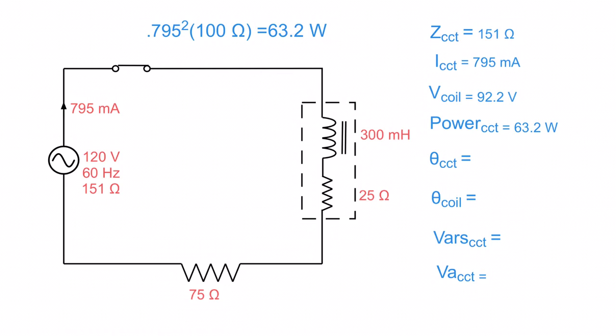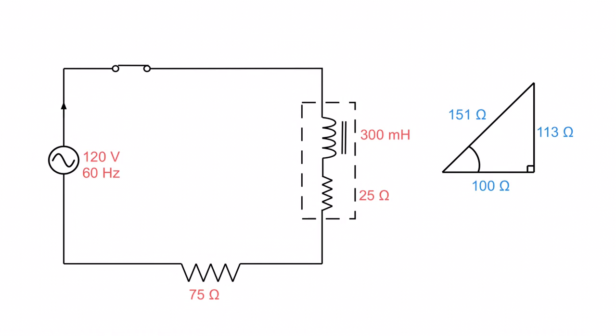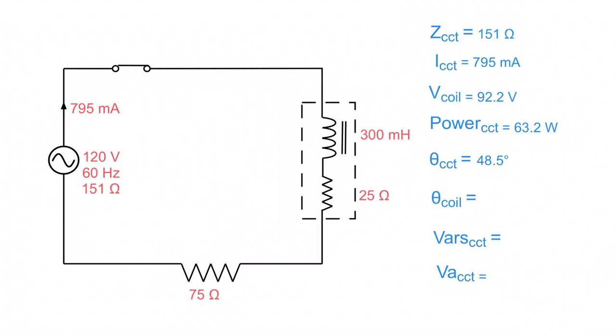Now let's find the phase angle theta of the circuit. Going back to the impedance triangle: 100 ohms resistance, 113 ohms reactance, 151 ohms impedance. To find theta, I take 100 divided by 151 and then take the inverse cosine. That works out to be 48.5 degrees for the circuit's phase angle.